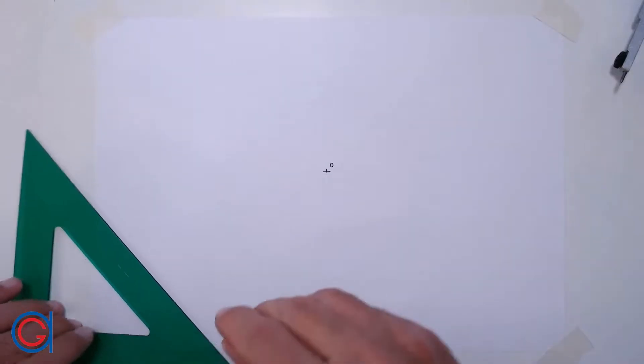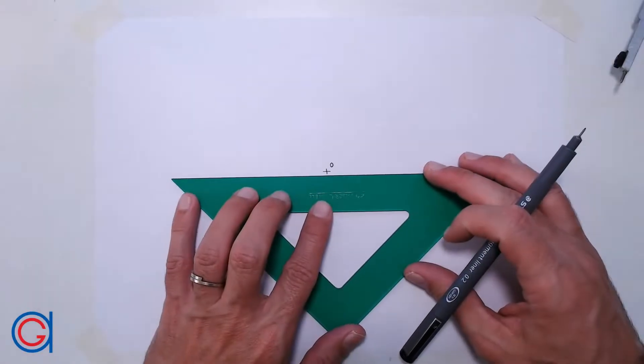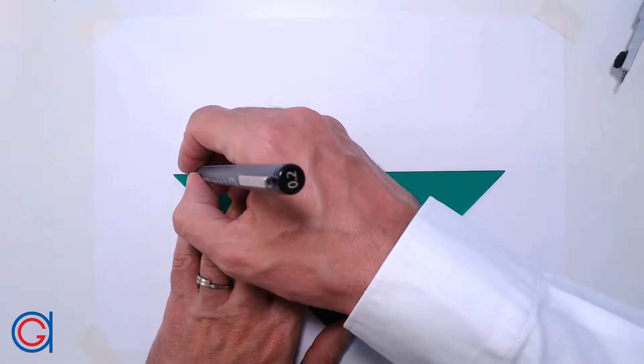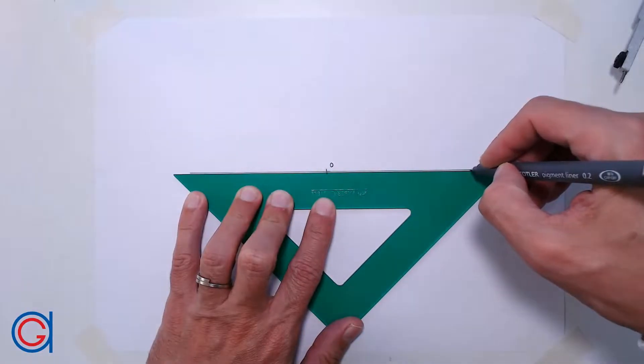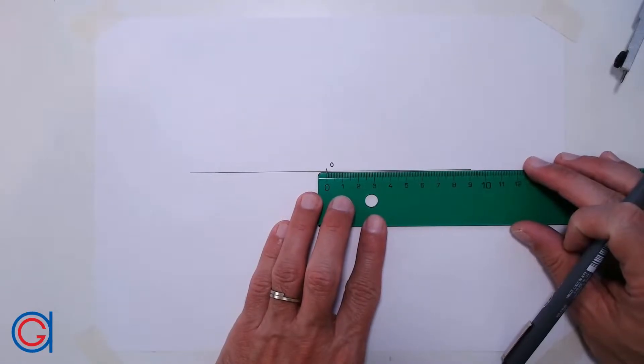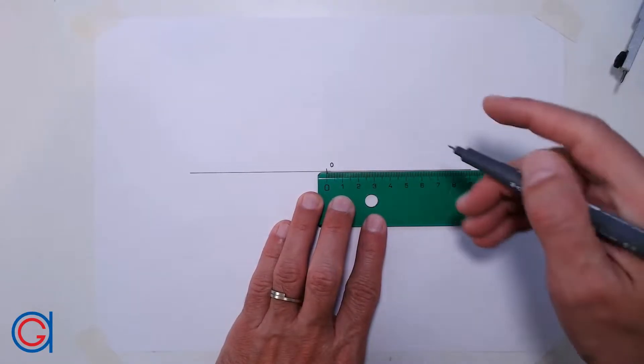So to continue, we are going to draw a horizontal line through the center point O, and we are going to mark a radius of five centimeters on the horizontal line, as can be seen here, obtaining a new point P.